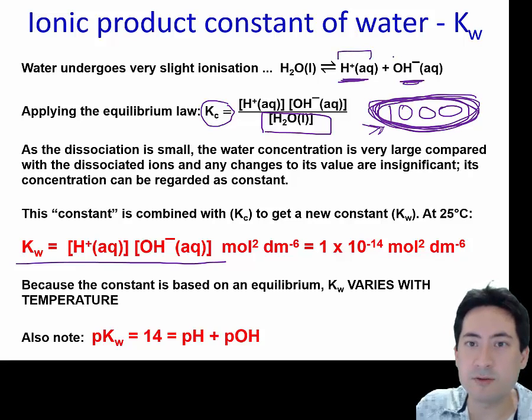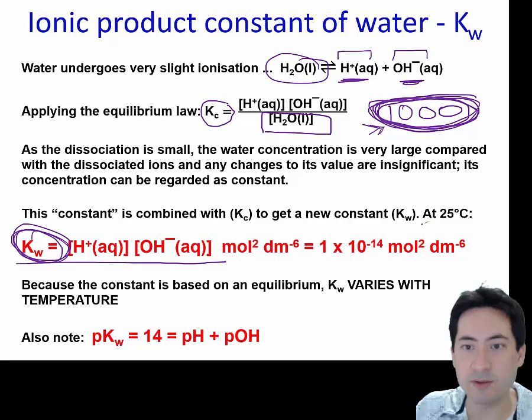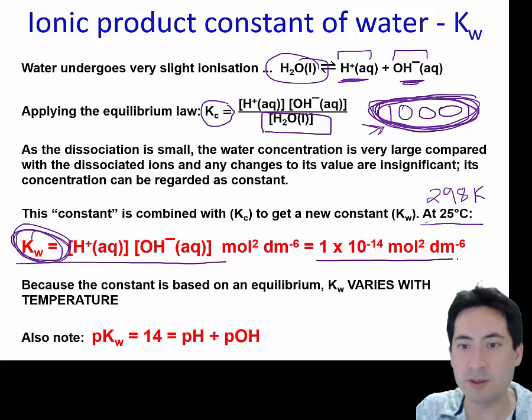So as these concentration values are so tiny, we times those two together and we erase this very large value and we get something we can work with that's called the ion product constant of water. This at 25 degrees Celsius or 298 kelvin gives us this value.